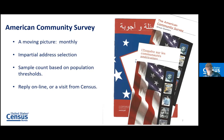The American Community Survey is a moving picture — we do it every month of every year, and we did not stop because of the decennial census. Some people were actually receiving the ACS form at the same time as their 10-year census form, which is a little confusing, but we try to explain. It is an impartial address selection — we don't know beforehand if people live there or not, but we are obligated to find that out. It's a sample count; we do about one percent of the population or housing stock every year.